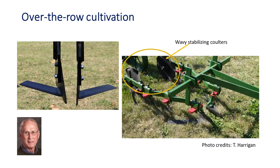This over-the-row cultivator has pairs of beet knives for close cultivation in clean, residue-free fields. A long, flat, vertical plate runs parallel to the row to protect the crop from soil. A thin, flat sweep cuts and uproots weeds in the row middle. Trailing the beet knives are standard cultivator shovels for additional inter-row tillage to separate soil from the plant roots. Wavy stabilizing coulters follow to prevent side-to-side lateral movement of the cultivator.